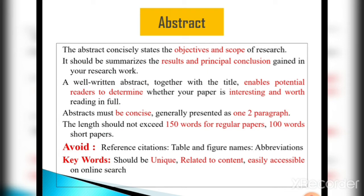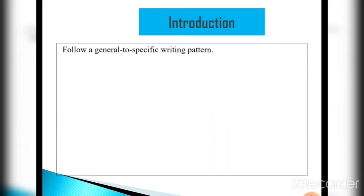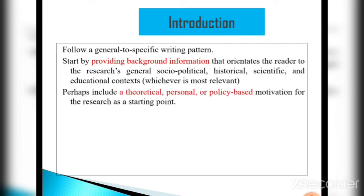After the abstract, we have to write keywords. Keywords should be unique, related to the content, and easily accessible in online searches. Next is the introduction. The introduction follows a general-to-specific written pattern. Start by providing background information that orients the reader to the research's general socio-political, historical, scientific, and educational context.